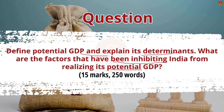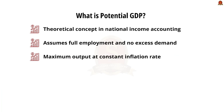In our introduction part, we have to address what is potential GDP. Potential GDP is a theoretical aspect of national income accounting which assumes that an economy has achieved full employment and that total demand does not exceed total supply — which is very optimistic. It is the maximum level of output that an economy can produce at a constant inflation rate.